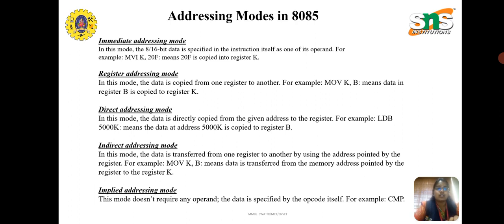In register addressing mode, data is copied from one register to another. For example, MOV C, B means data in register B is copied into register C. In direct addressing mode, data is directly copied from a given address to a register. For example, LDA 5000H means the data at address 5000H is copied to the accumulator register.